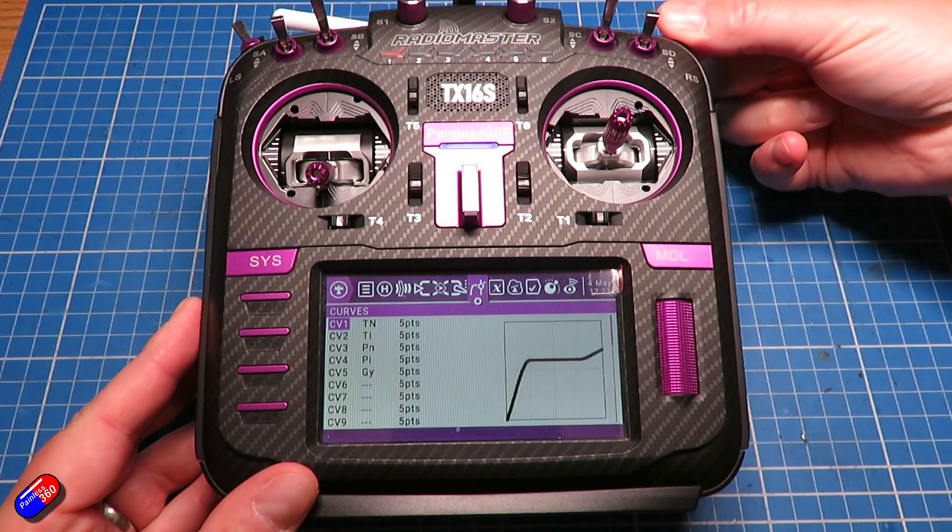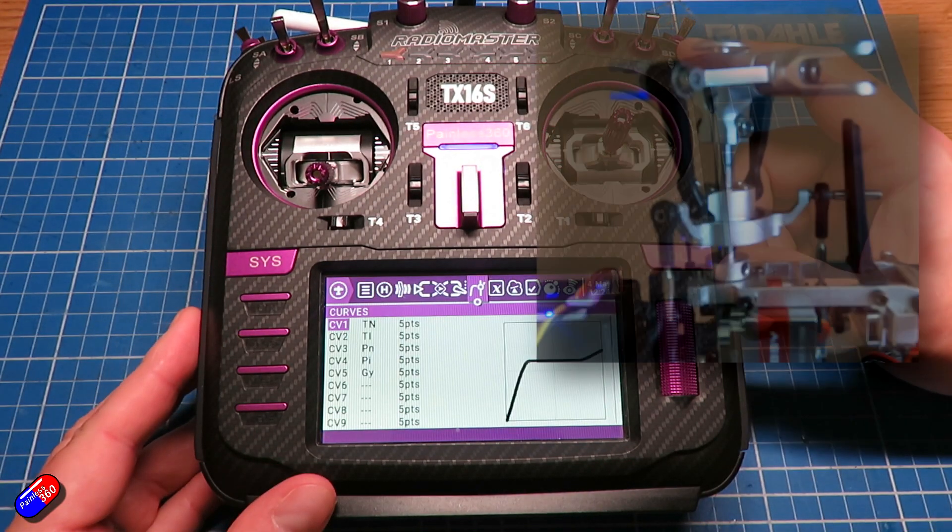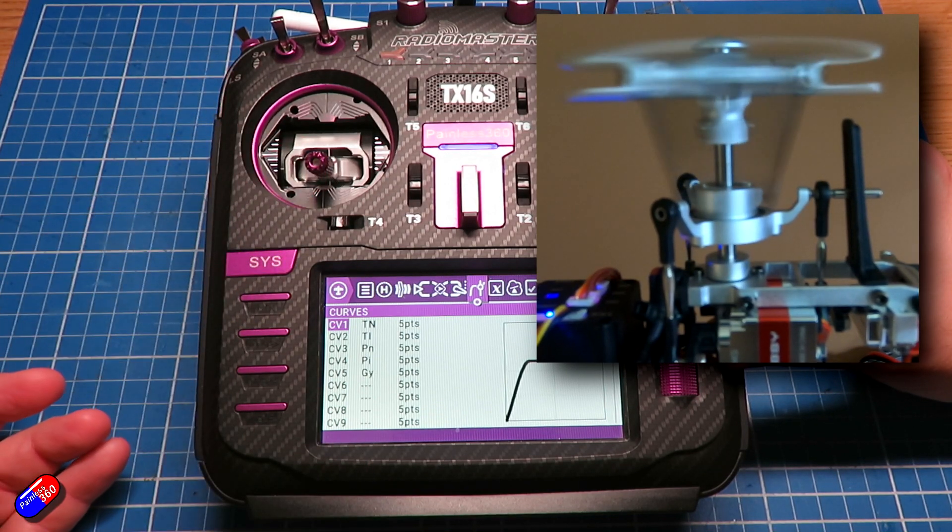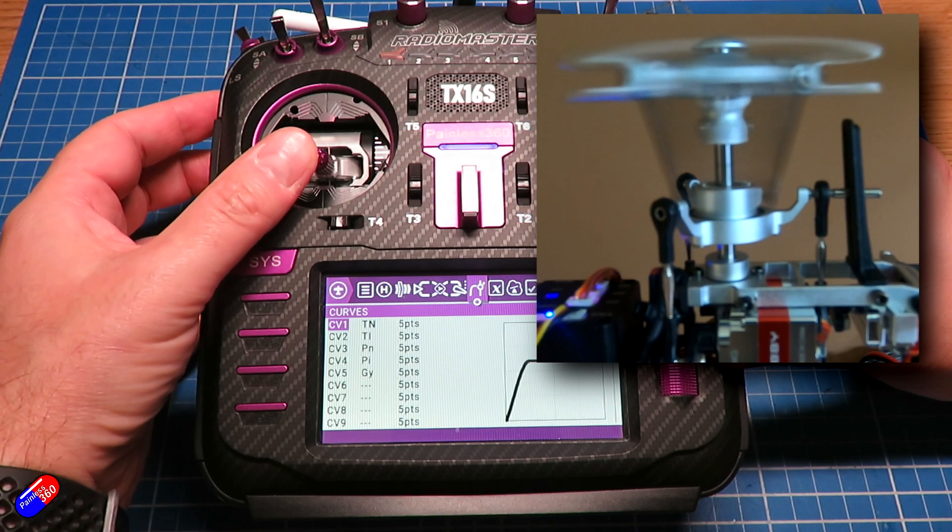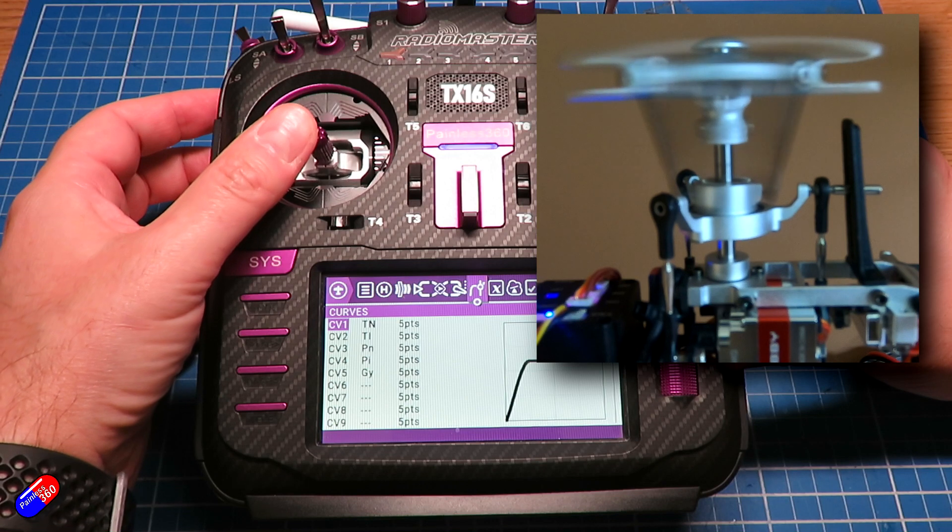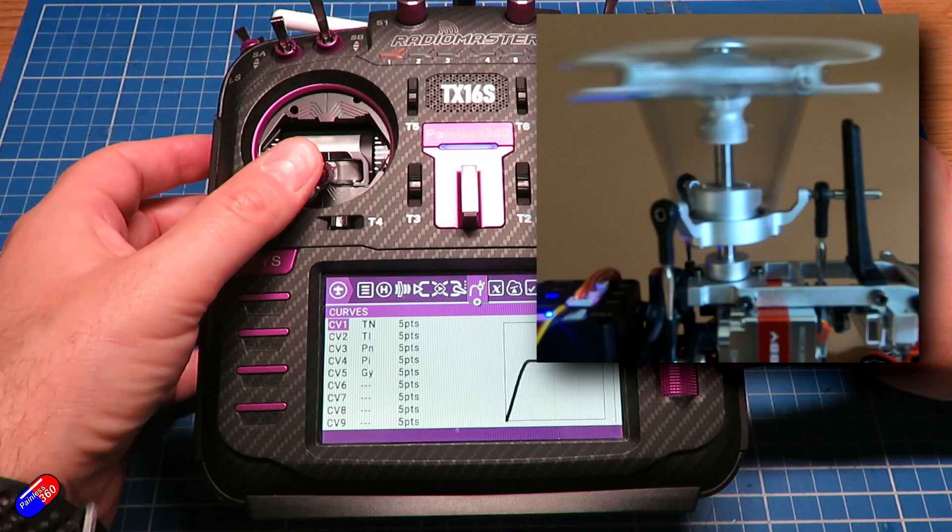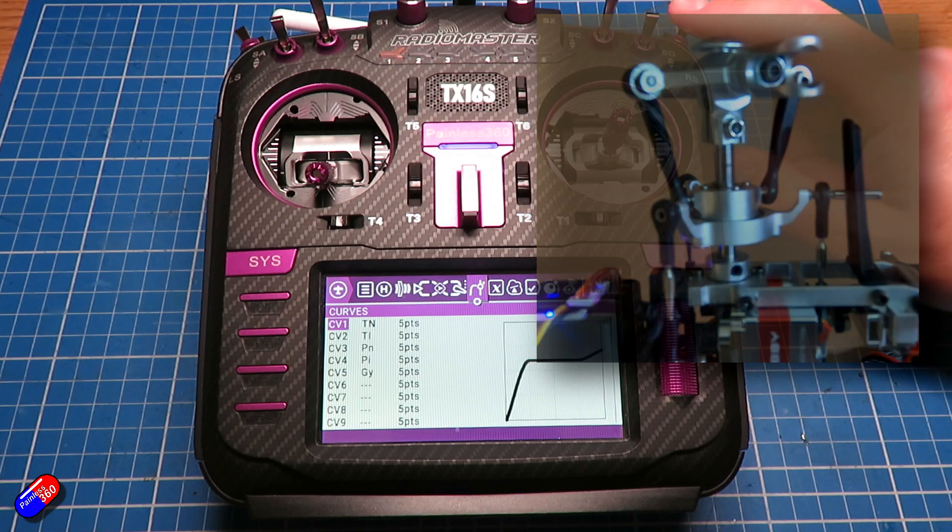So if I make the throttle live then what I can do is as I increase the throttle in normal mode the head will start and then it will continue to increase, and then I can also stop it as well. Let me put the throttle hold back on.